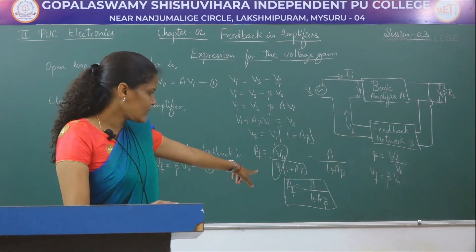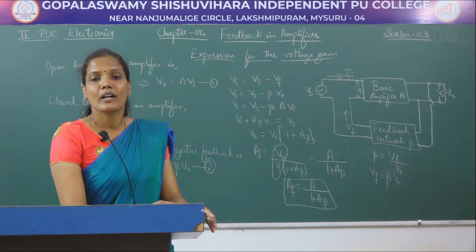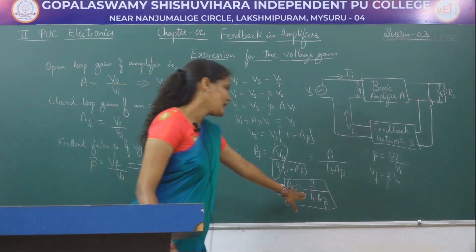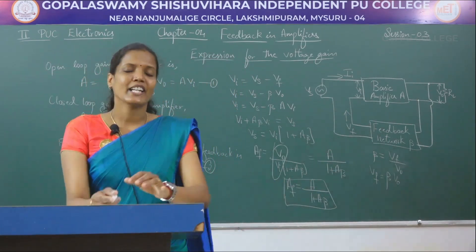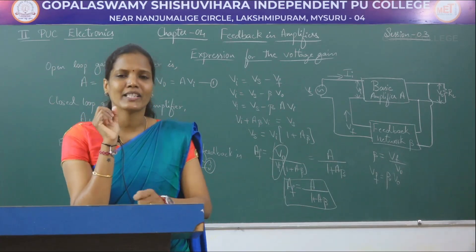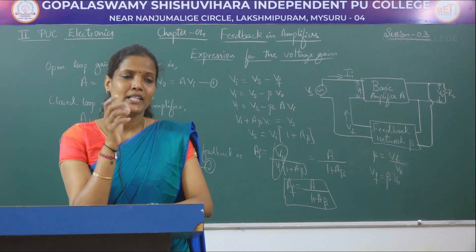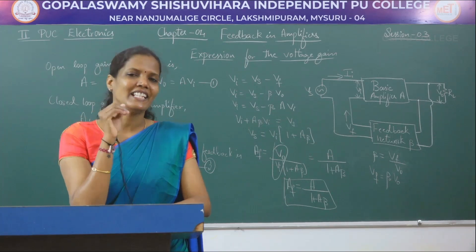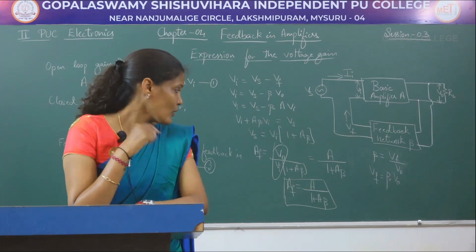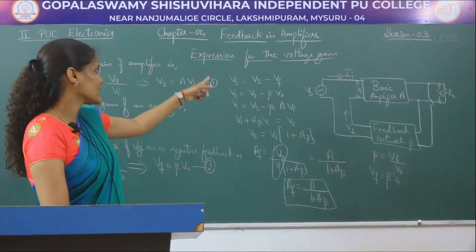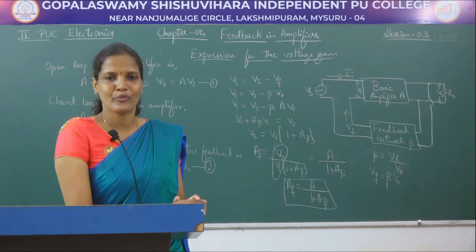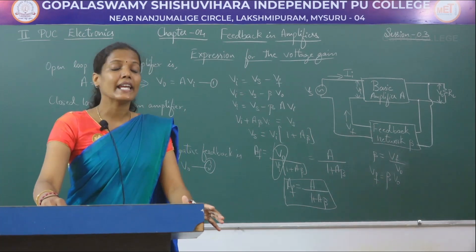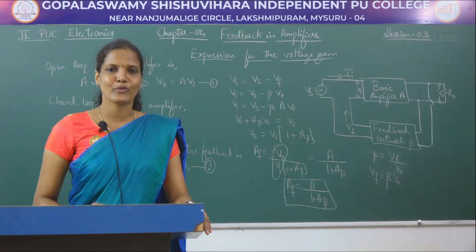Looking at the expression AF equals A divided by (1 plus A·beta), we can clearly tell that the voltage gain in the negative feedback will decrease by a factor of (1 plus A·beta). Since the net input for the amplifier circuit decreases in the case of negative feedback, the overall gain also decreases. This is the expression for the voltage gain of a voltage series negative feedback circuit.